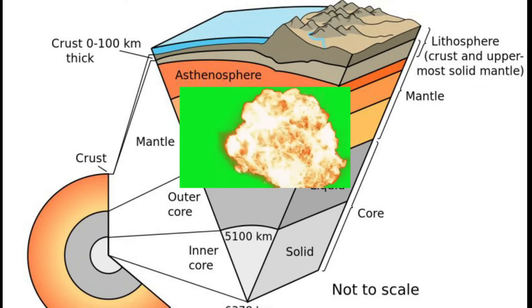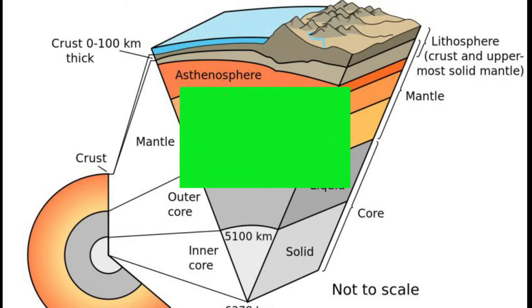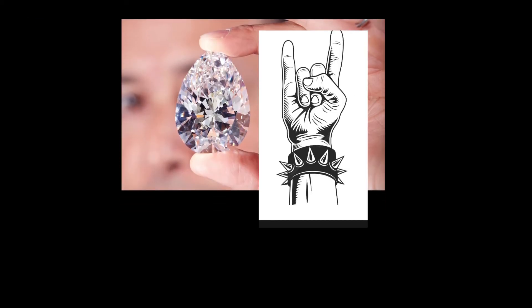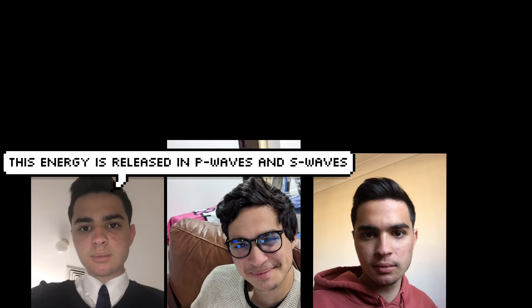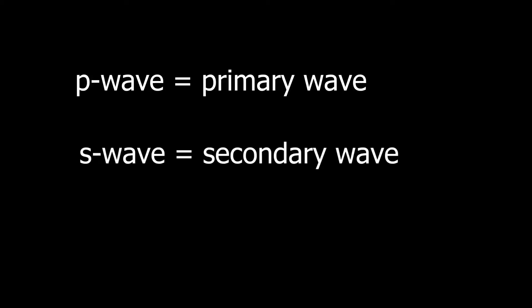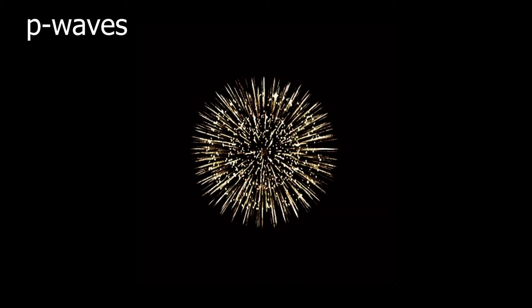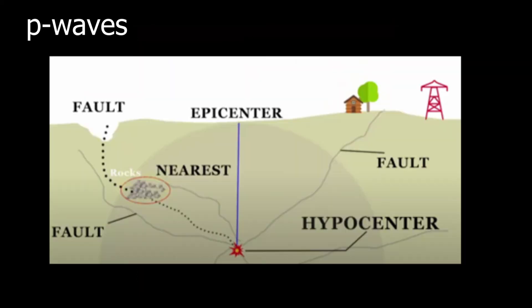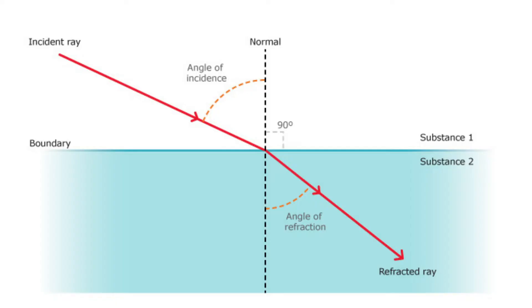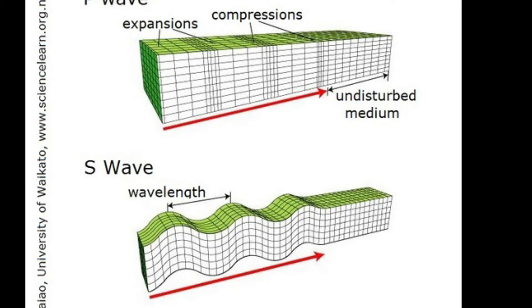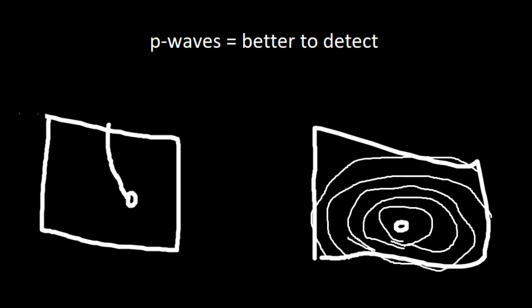Earthquakes originate from bursts of energy within the lithosphere, typically caused by colliding tectonic plates or rocks slipping past one another. For simplicity, we'll say that this energy is released in P waves and S waves, or primary and secondary waves. The P waves act similarly to a firework, shooting beams of energy from the hypocenter that travel through the rock making up the lithosphere. These waves act similarly to light when moving through layers of differing densities, refracting upwards towards the surface. These waves are also significantly less destructive and reach the surface much faster than the following secondary waves, making them ideal to detect.